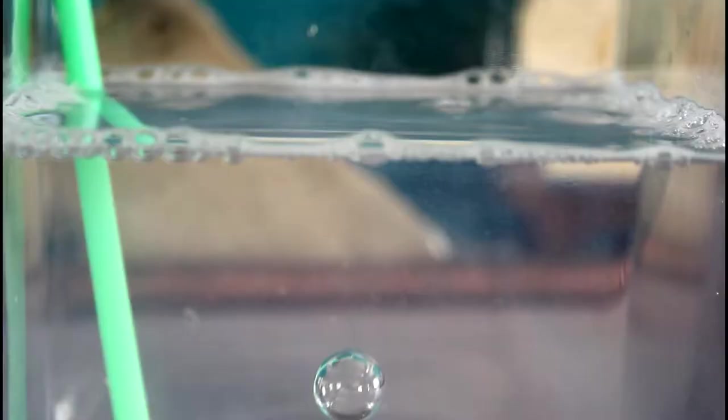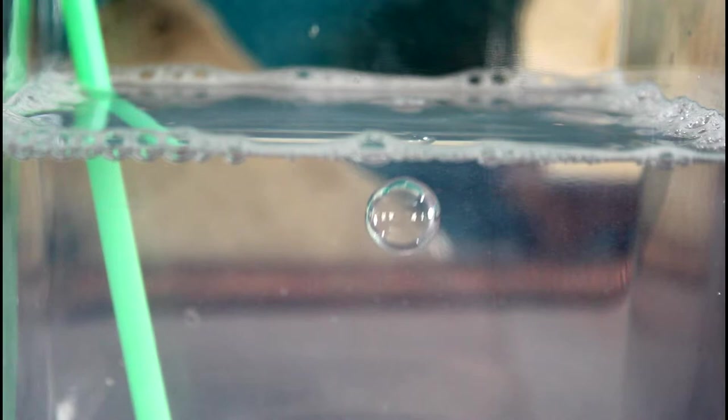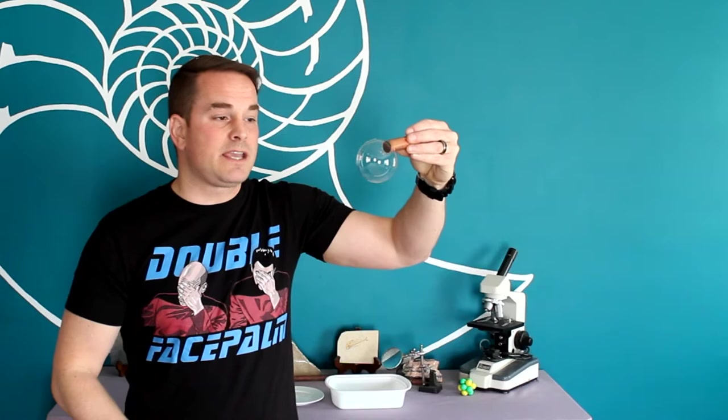Now, your anti-bubbles won't really last that long, and the exact reason why is still being researched. But the leading idea currently is that the thin membrane of air is constantly dissolving into both the soap on the outside and on the inside of the anti-bubble. As that air dissolves, the thin membrane gets thinner and thinner until eventually it closes off and the anti-bubble pops. And this is very similar to how a regular bubble pops too. That thin membrane of soapy water is constantly evaporating into the air.